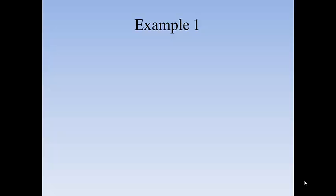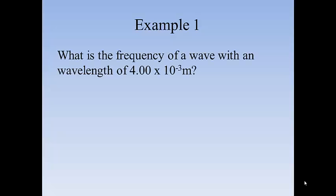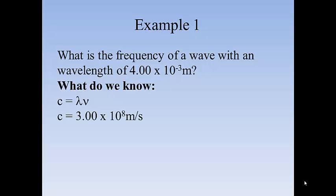So here's the first example, and we'll do this one together. What is the frequency of a wave that has a wavelength of 4.00 times 10 to the minus 3 meters? First question to ask for all of these is what do we know? We know that C equals λν. We know that C equals 3 times 10 to the 8th meters per second. We know the wavelength because that's given in the problem. What we don't know is the frequency.